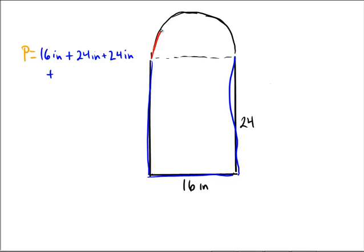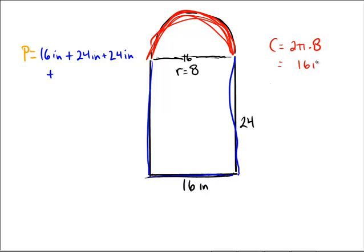But we have in red a semicircle. So given that the diameter, the length down here was 16, so that means the length here must be 16. And therefore the radius would be half of that, which is 8. So the actual red length from here to here would be circumference equals 2 times pi times the radius of 8, which is equal to 16 pi.